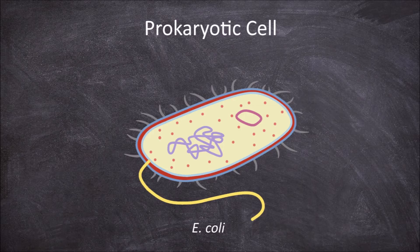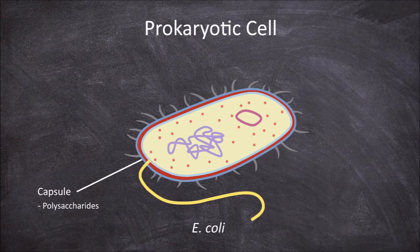Prokaryotic cells can have what is called the capsule or slime capsule on the outside of the cell. The capsule is a thick layer made of polysaccharides. It functions in protecting the cell from drying out and also in helping them attach to surfaces.